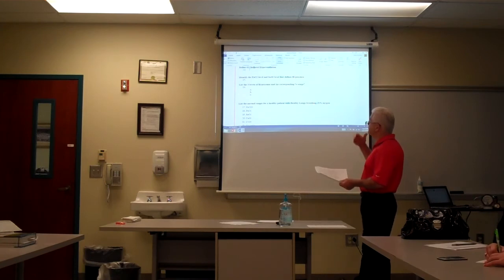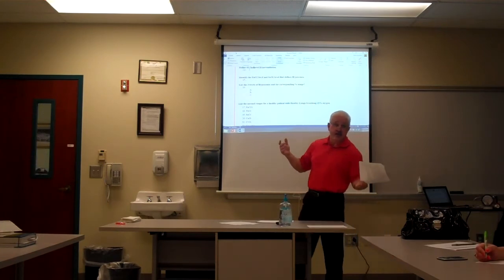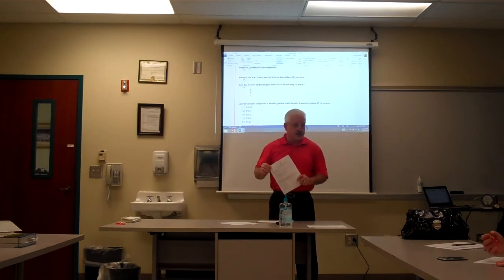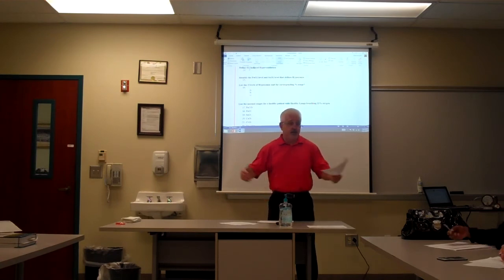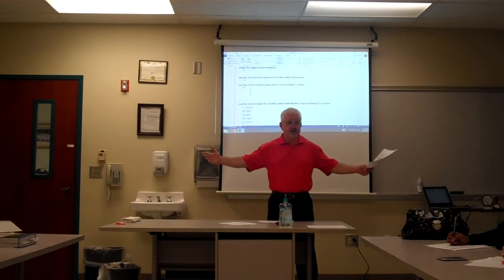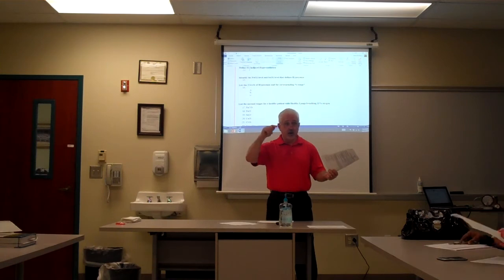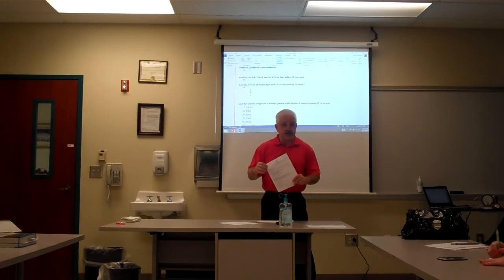Define or identify the PAO2 level and SAO2 level that defines hypoxemia. According to AARC clinical practice guidelines and the oxyhemoglobin dissociation curve, a PaO2 less than 60 mmHg and a saturation less than 90% defines hypoxemia. There are three levels: mild is 60–79 mmHg, moderate is 40–59 mmHg, and severe is less than 40 mmHg. Normal is 80–100 mmHg.